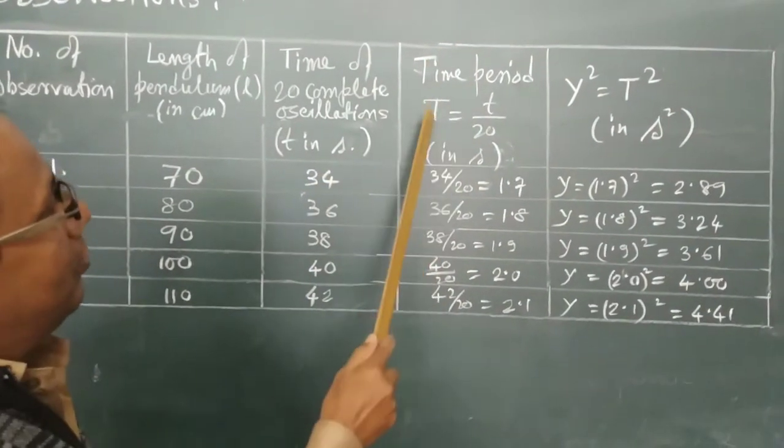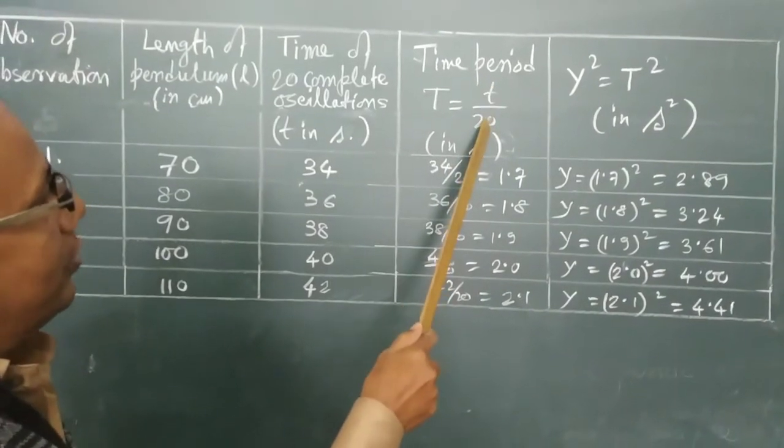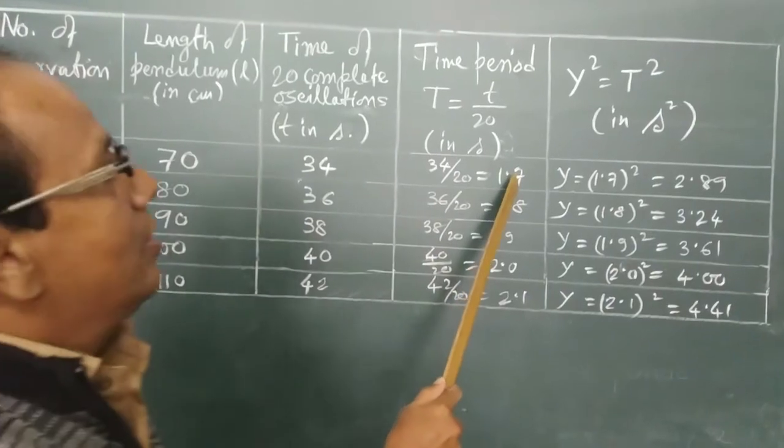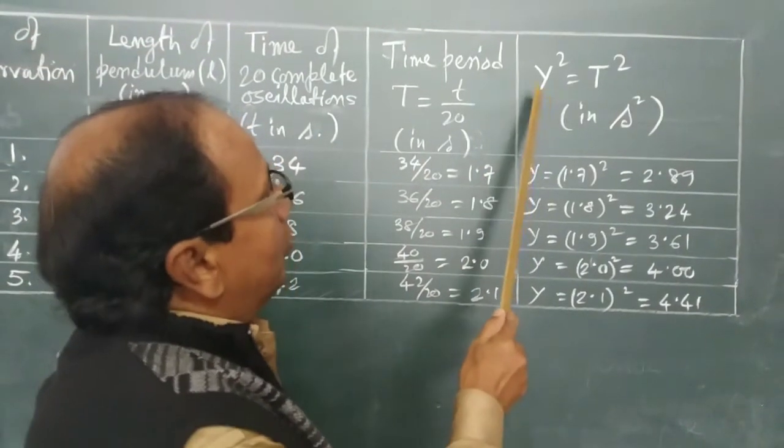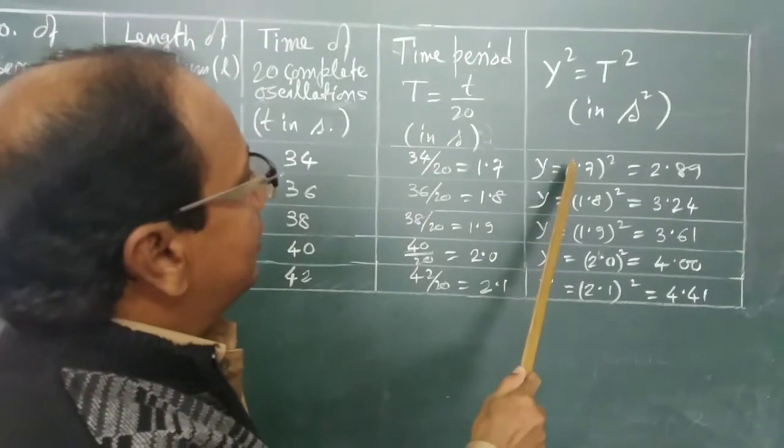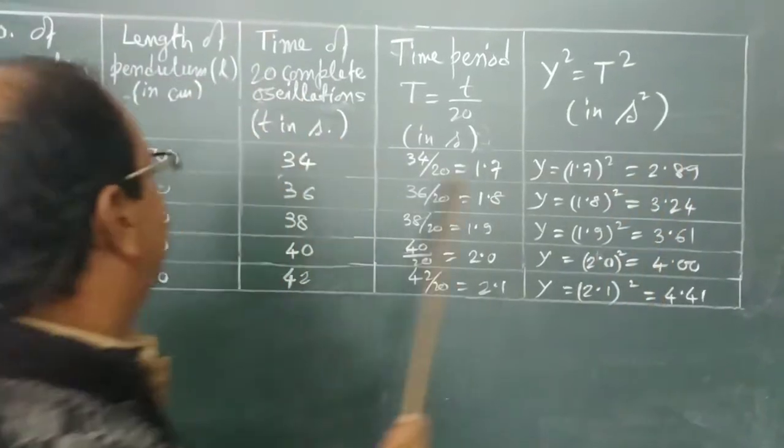So time period equals to capital T, 34 by 20, equals 1.7 seconds. And now we have to plot Y. So when we get the value of Y, means 1.7 whole square, we got here 2.89. Similarly